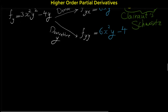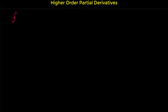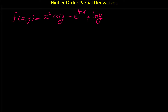Let's do another example. The given function is f(x, y) = x squared cosine y minus e to the 4x plus the natural log of y. We want to find all second partial derivatives of this function. First, we need to find the first partial derivatives f sub x and f sub y.